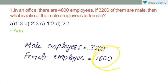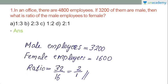We have 1,600 female employees. Now the ratio of male to female is 3200 to 1600. We simplify 32 to 16, and the lowest form is 2 is to 1. So the answer for this question will be option D — 2 is to 1.